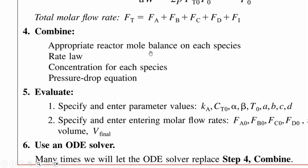Then combining all of these: appropriate reactor mole balance on each species, because if it's a CSTR we use that equation, if it's a PFR or PBR we use their differential equations, or for CSTR it will be an algebraic equation. Then rate law, concentration for each species, and pressure drop equation.